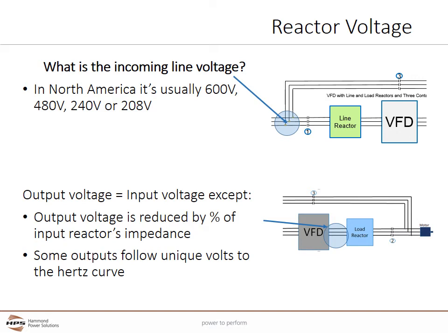Incoming voltage is typically easy to determine. In North America, it's usually 600, 480, 240, or 208 volts. Other voltages are available in the selection charts or the ePortal configuration systems. The output voltage equals the input voltage except the output voltage is reduced by the percent of the input reactor's impedance if an input reactor is used. Note that some VFD outputs follow a unique volts-per-hertz curve that may differ in both frequency and voltage from the input. Please consult HPS for these situations to properly size a load reactor.